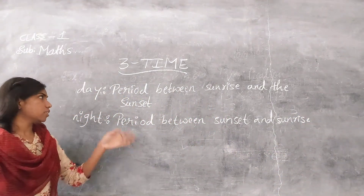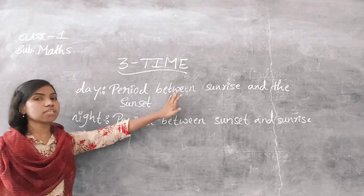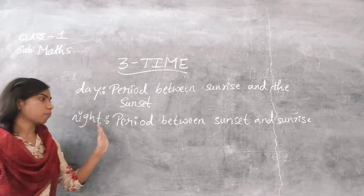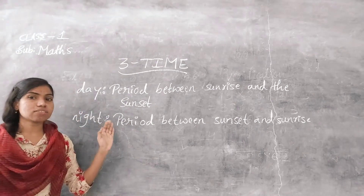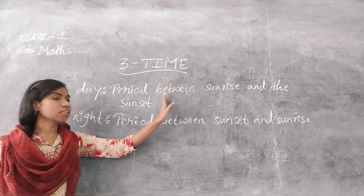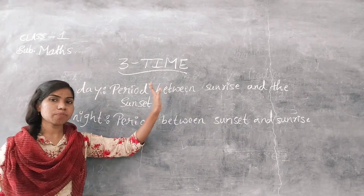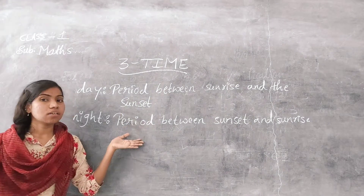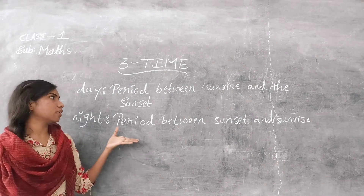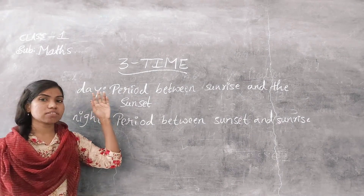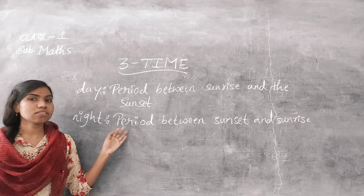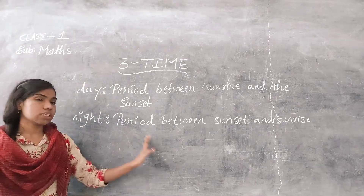So day means it is a period between sunrise and sunset, and the second one is night. Night means it is a period between sunset and sunrise. In day time we can see the sun in the sky, and in night time we can see stars and moon in the sky.